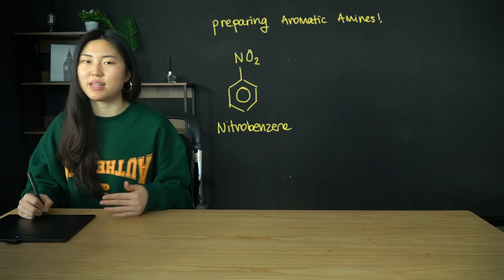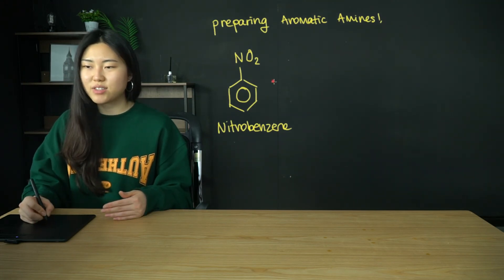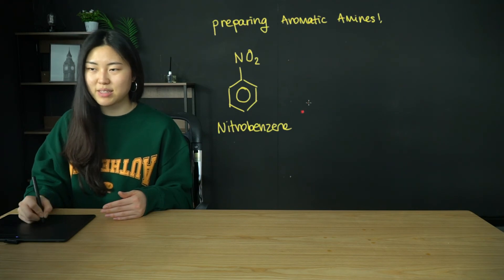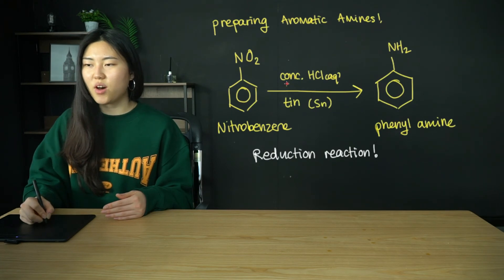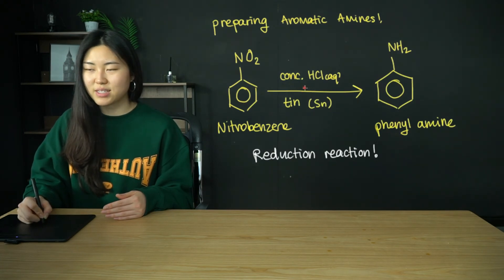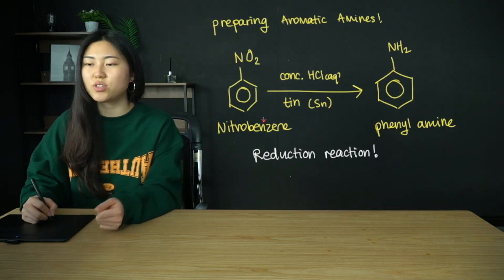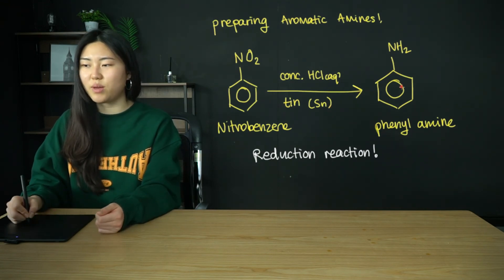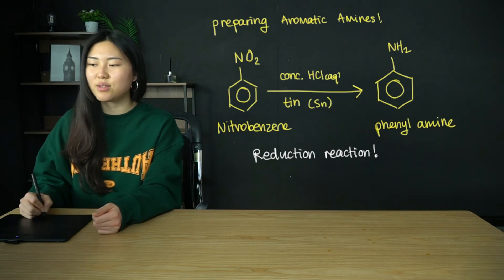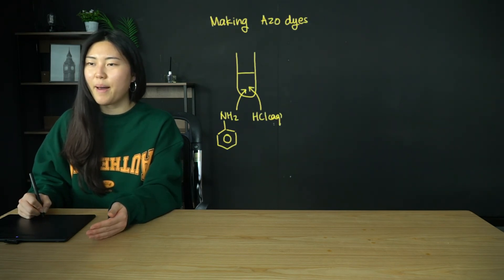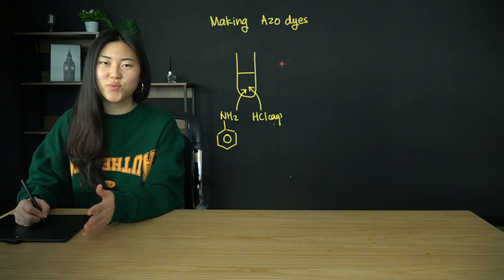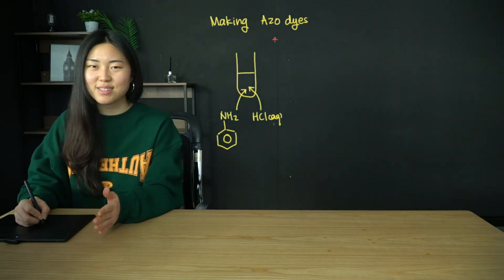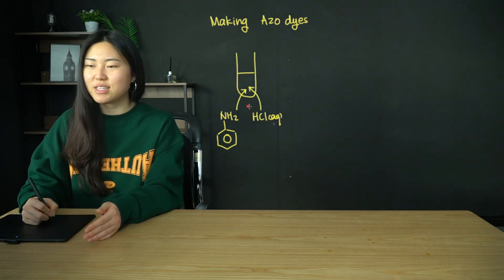To prepare aromatic amines, we start with nitrobenzene. Using concentrated hydrochloric acid and tin as a catalyst, nitrobenzene is reduced to phenylamine. This is a reduction reaction.